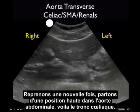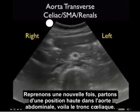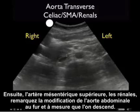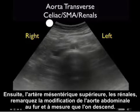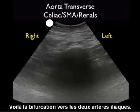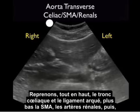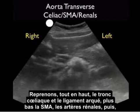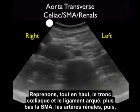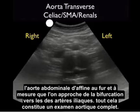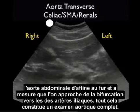Now we'll put it all together, starting high in the abdominal aorta. There's the celiac axis, then the superior mesenteric artery, then the renals. Notice that the abdominal aorta becomes more superficial as it moves inferiorly. We see the bifurcation into the paired iliac arteries. Reviewing from the top: the celiac or seagull sign, moving down to the SMA, the renal arteries, and finally branching into the paired iliac arteries — a complete aortic exam.